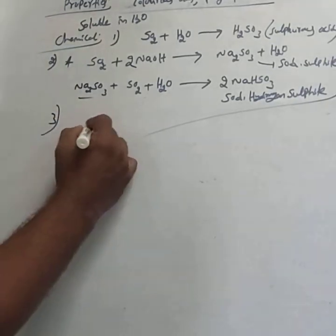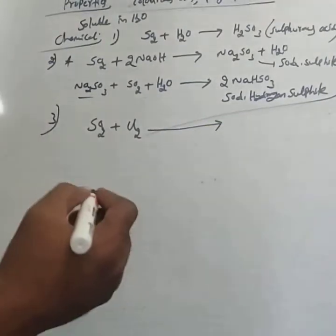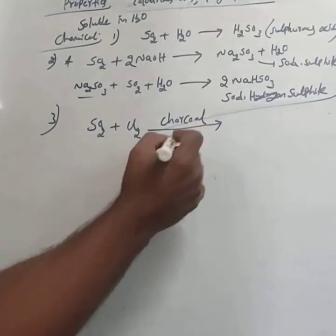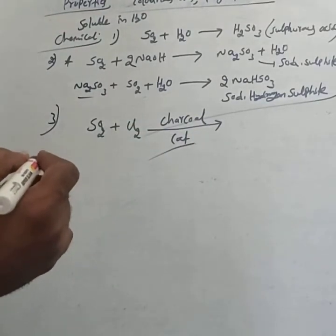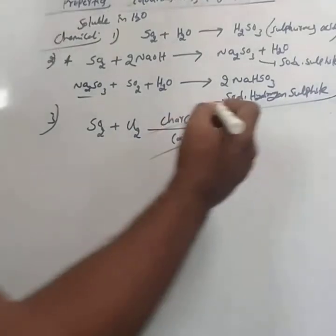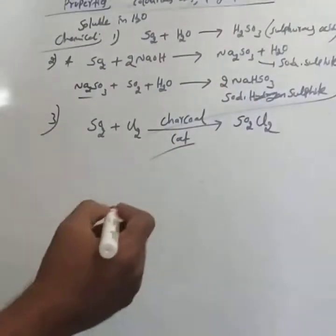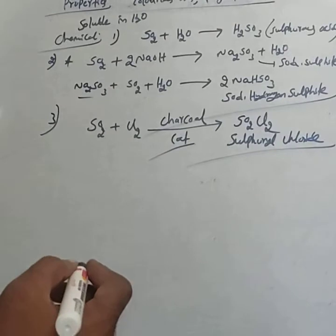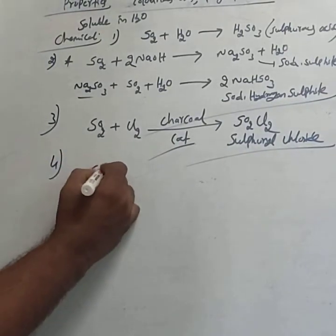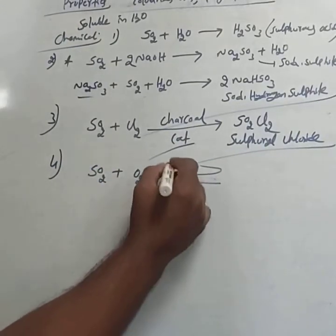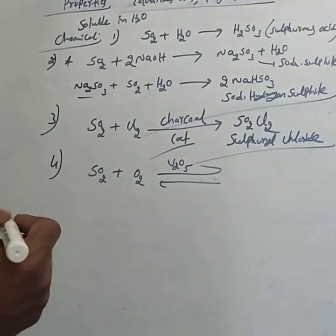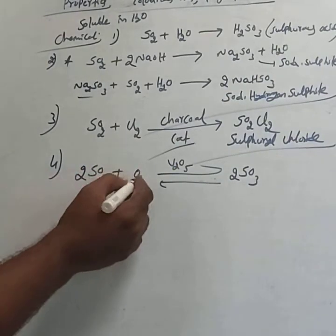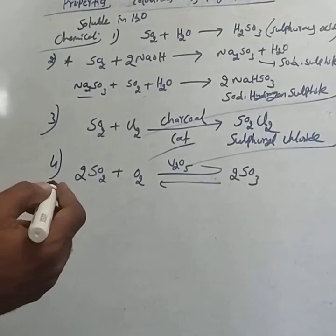The third property is sulfur dioxide reacts with chlorine in the presence of charcoal as the catalyst, forming sulfuryl chloride, SO₂Cl₂. This is important for completing equations. Next, sulfur dioxide reacts with oxygen in the presence of vanadium pentoxide as catalyst to form sulfur trioxide: SO₂ + ½O₂ → SO₃. This is used in the contact process for the manufacture of sulfuric acid.